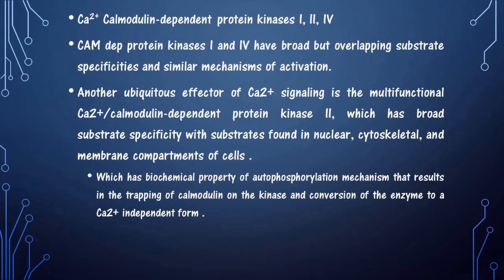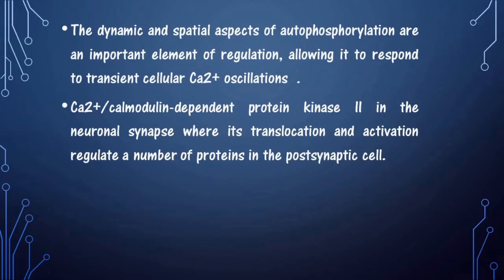There are different calmodulin-dependent protein kinases 1, 2, and 4. CaMK1 and CaMK4 have broad but overlapping substrate specificities and similar mechanisms of activation. CaMK2 has broad substrate specificity with substrates found in nuclear, cytoskeletal, and membrane compartments, and has an autophosphorylation mechanism that results in trapping of calmodulin on the kinase. Autophosphorylation allows CaMK2 to respond to cellular calcium concentrations, and in the neuron synapse its translocation and activation level regulates proteins in the post-synaptic cell.